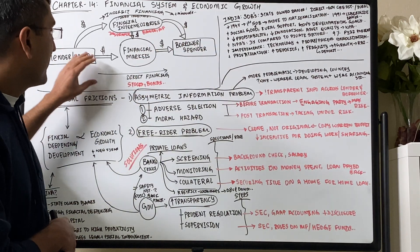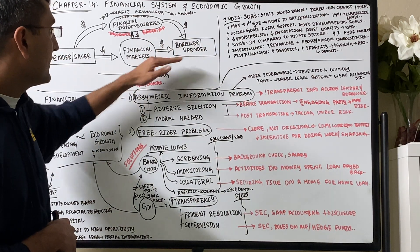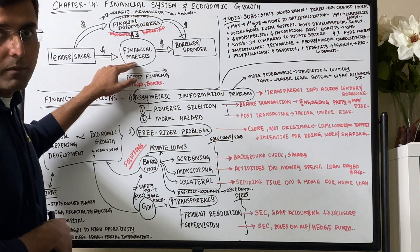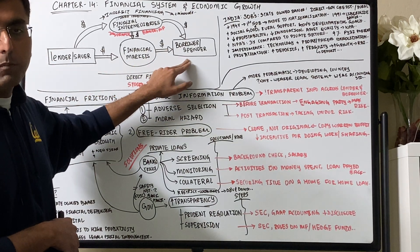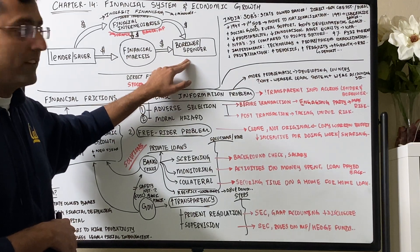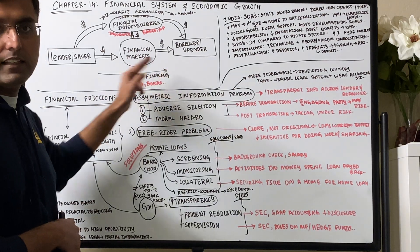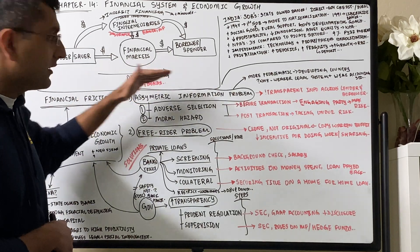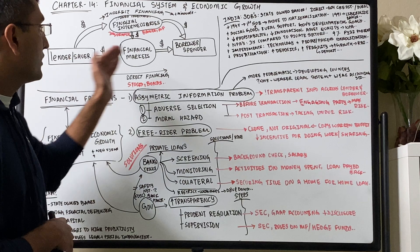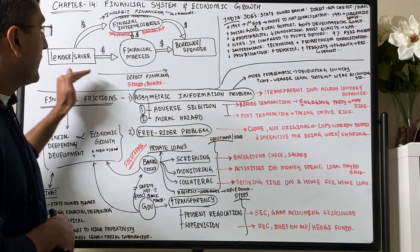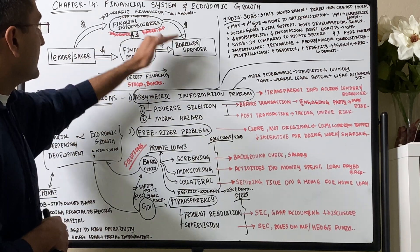When it goes through direct financing, it goes to the financial markets. These lenders know these are the best borrowers. These companies are the best to invest in, so they buy their stocks, they buy their bonds. That's direct financing through stock markets. Money flows directly from lenders to borrowers.